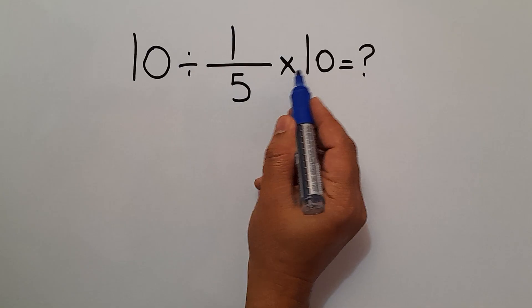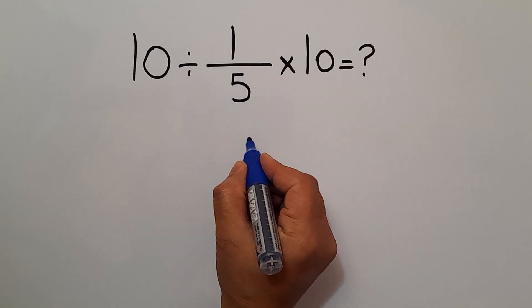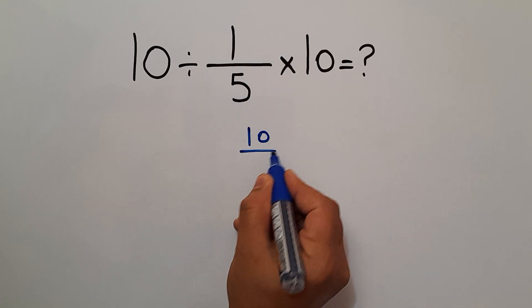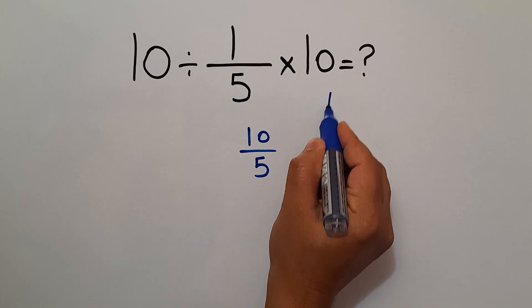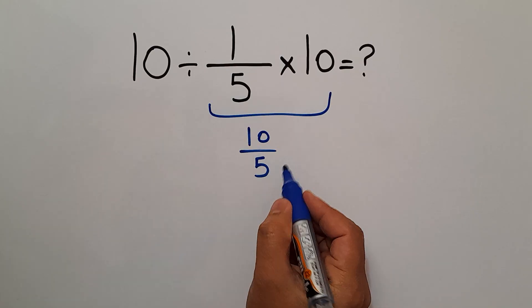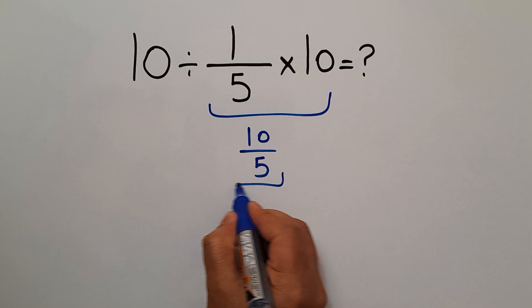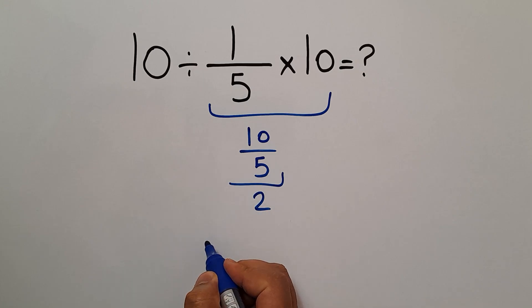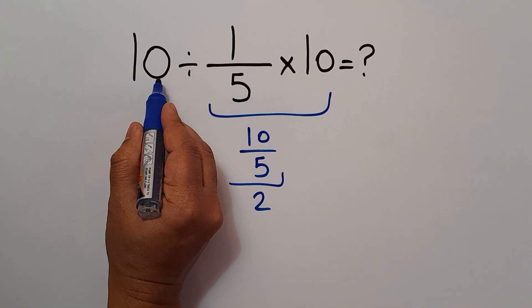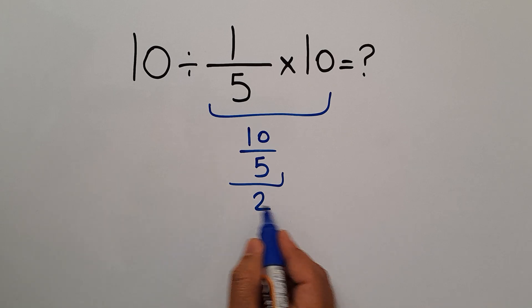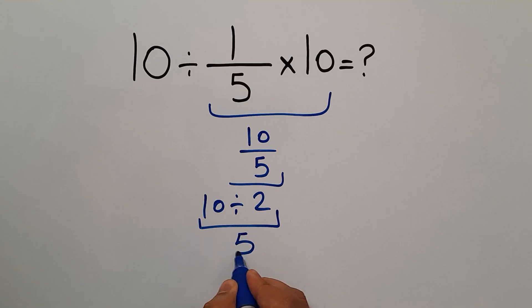1 over 5 times 10, we can write as 10 divided by 5. And 10 divided by 5 equals just 2. So 10 divided by 2 equals 5, but this answer is not correct.